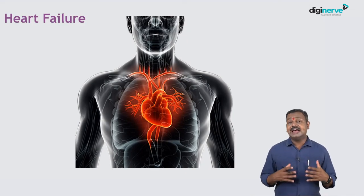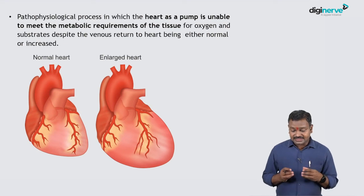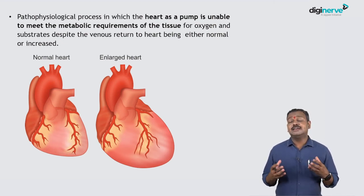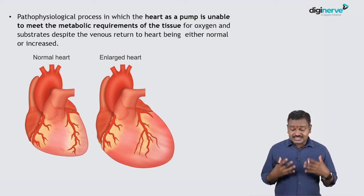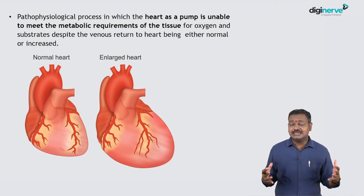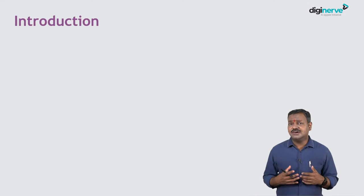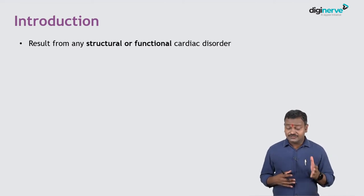We will discuss what heart failure is, its sequelae, and its causes. Pathophysiologically, heart failure is the process where the heart as a pump is unable to meet the metabolic requirement of tissue oxygenation, despite adequate venous return — whether low output or high output. The heart is unable to pump enough blood. Most heart failures result from an enlarged, dilated heart where pumping capacity decreases, ejection fraction falls, and signs and symptoms of heart failure develop. It can result in structural or functional loss of cardiac function.